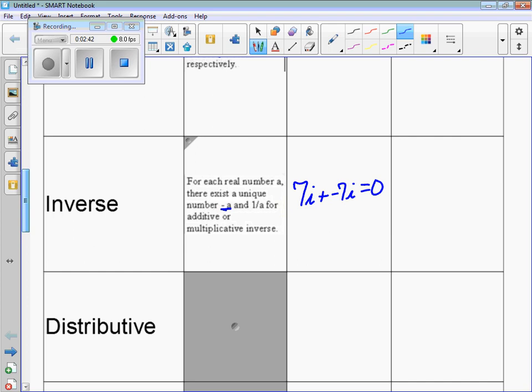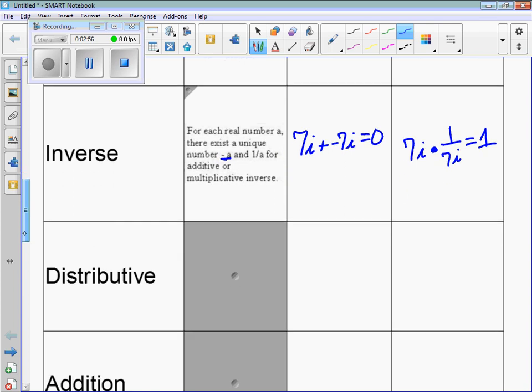And for multiplication, if I have 7i, you can multiply by 1 over 7i and you'll get 1. So these are inverses of each other: additive inverse and multiplicative inverse.